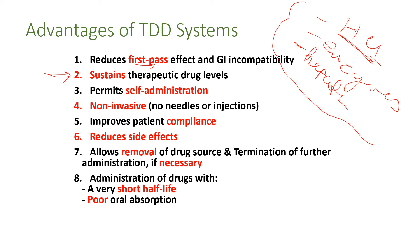To sustain drug release or maintain drug plasma levels, you can apply the active ingredient in a suitable cream or ointment on the skin, and by default it will give sustained release because permeation through the skin is very slow. Compared to injection, there is self-administration — the patient takes the transdermal patch or cream by themselves, with no need for hospitalization and no need for a nurse, doctor, or pharmacist. Self-administration is very convenient and good for patient compliance. It is also non-invasive — no needles or injections — so the patient will prefer it.